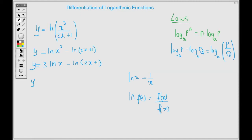For ln x, we write the 3 then differentiate ln x to get 1 over x. While for ln of 2x plus 1, we differentiate 2x plus 1 to get 2, all over 2x plus 1. The final step is to multiply 3 times the 1 in the numerator, so 3 times 1 gives us 3 over x, minus 2 over 2x plus 1. And that's it.